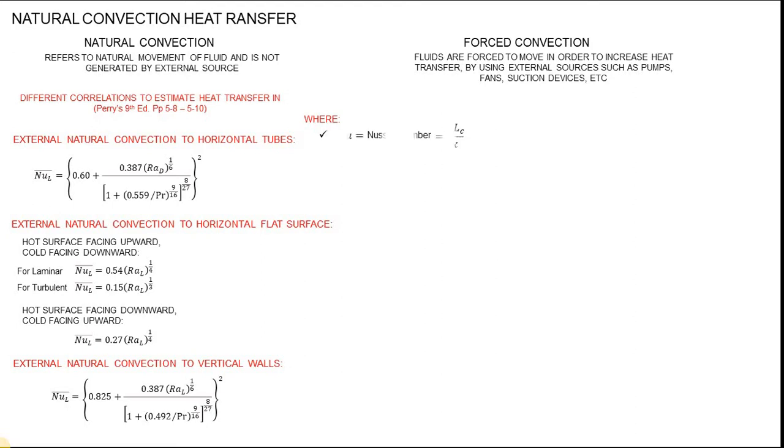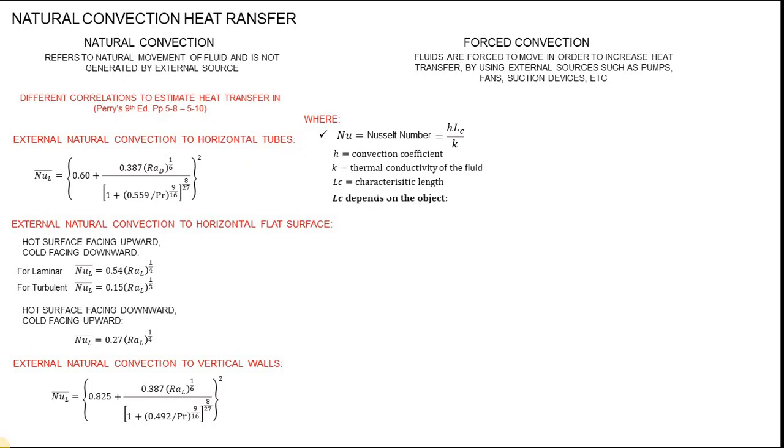The dimensionless Nu, or Nusselt number, is equal to H times LC over thermal conductivity K. H is the convection coefficient, and LC is called the characteristic length, which depends on the configurations of flow. A bar on the Nusselt number denotes that the Nusselt number is average, meaning the convection coefficient is also average.